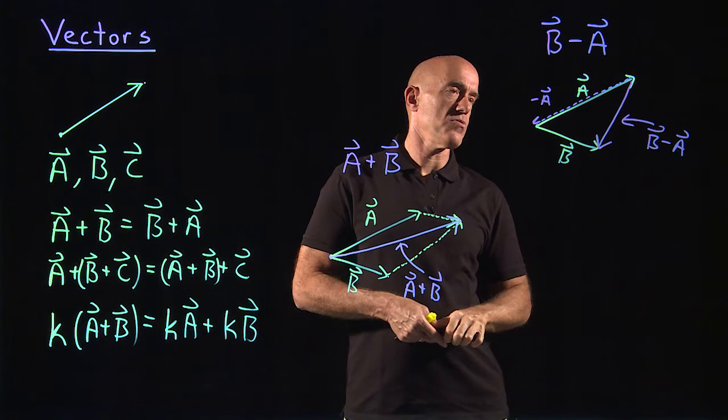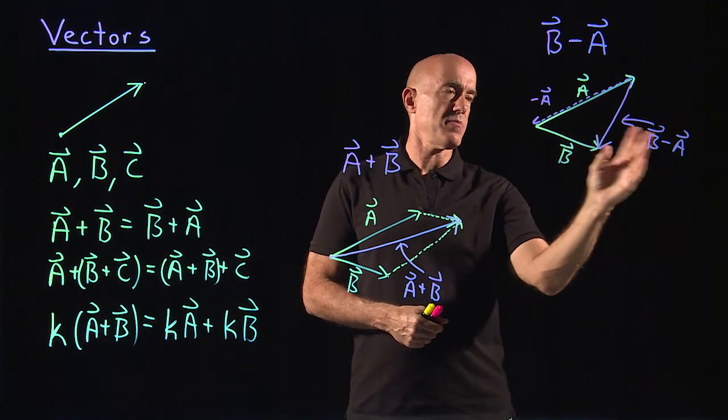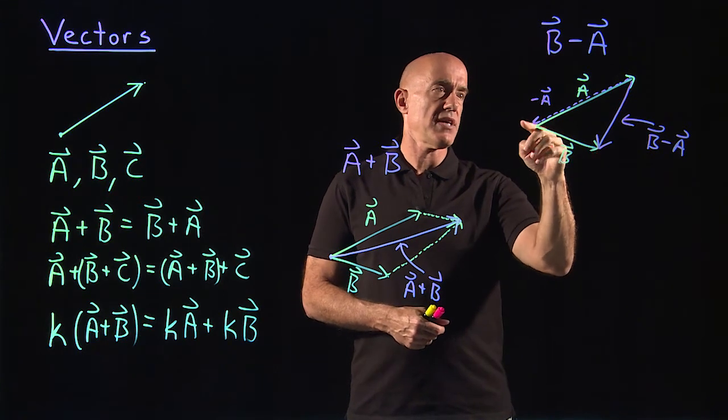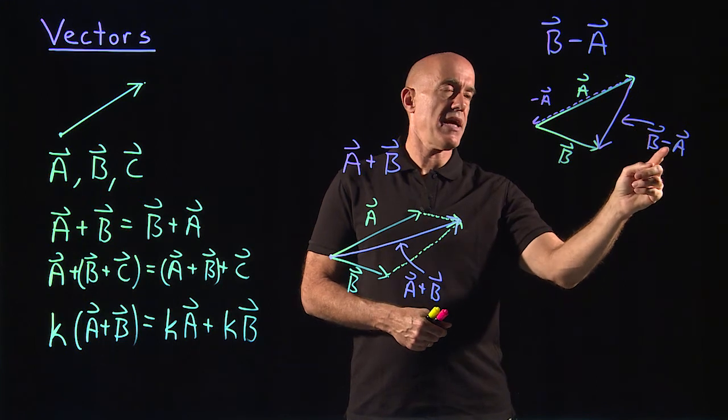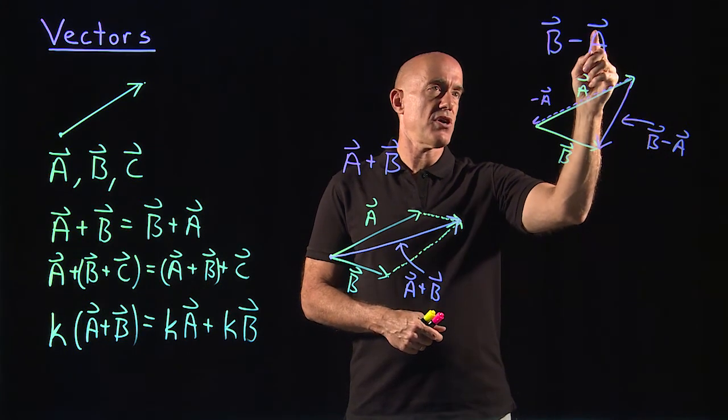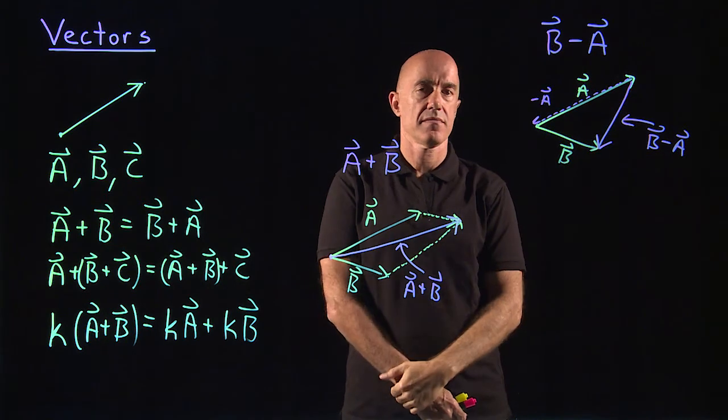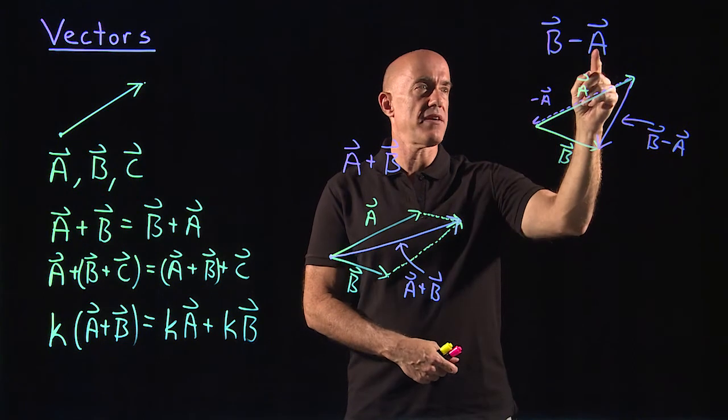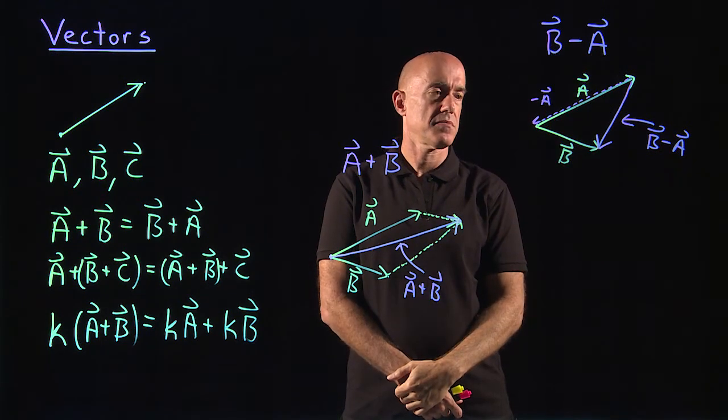The vector b minus a is obtained by putting these two vectors a and b tail to tail. But b minus a then will point from the head of vector a to the head of vector b. It points from the head of vector a to the head of vector b.